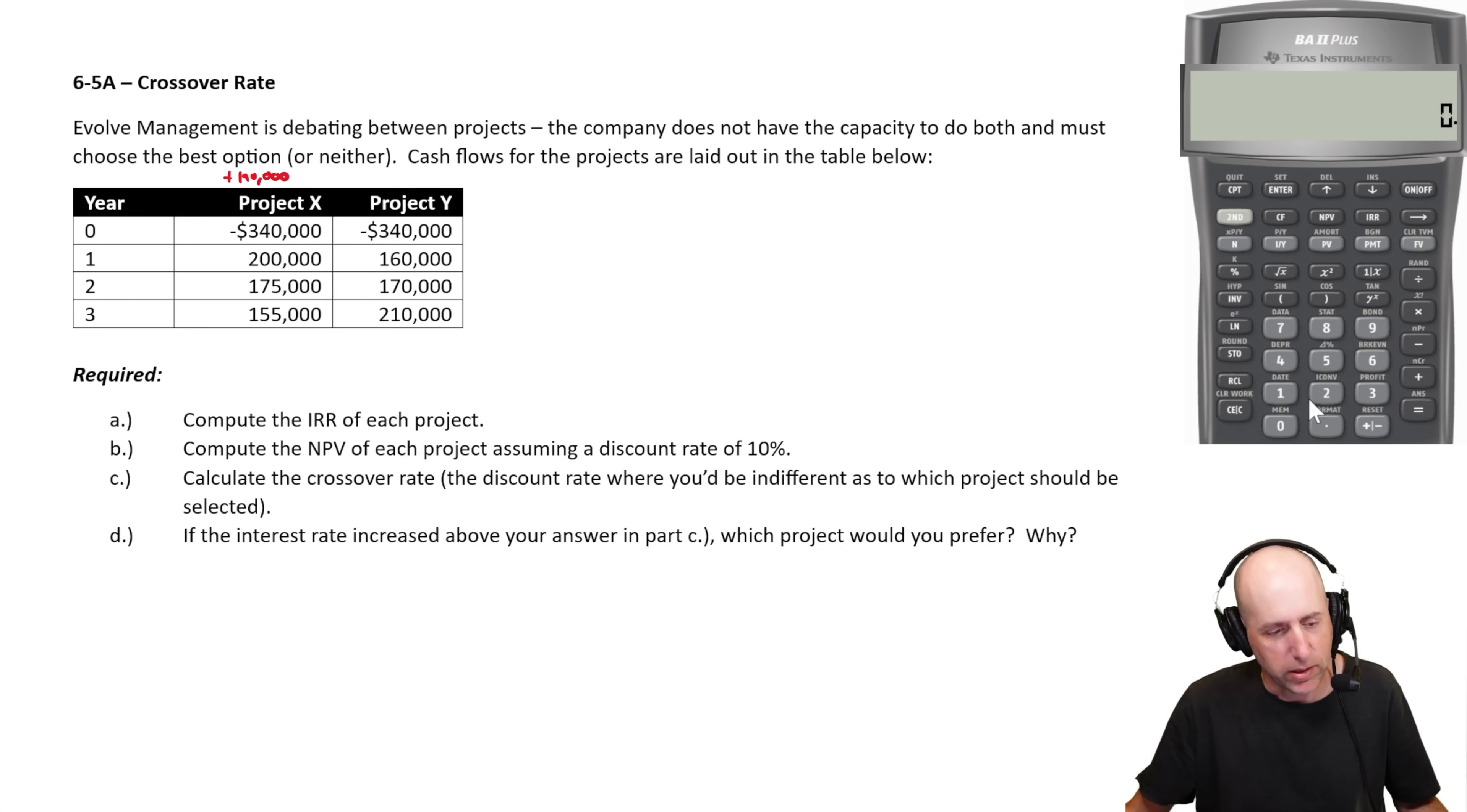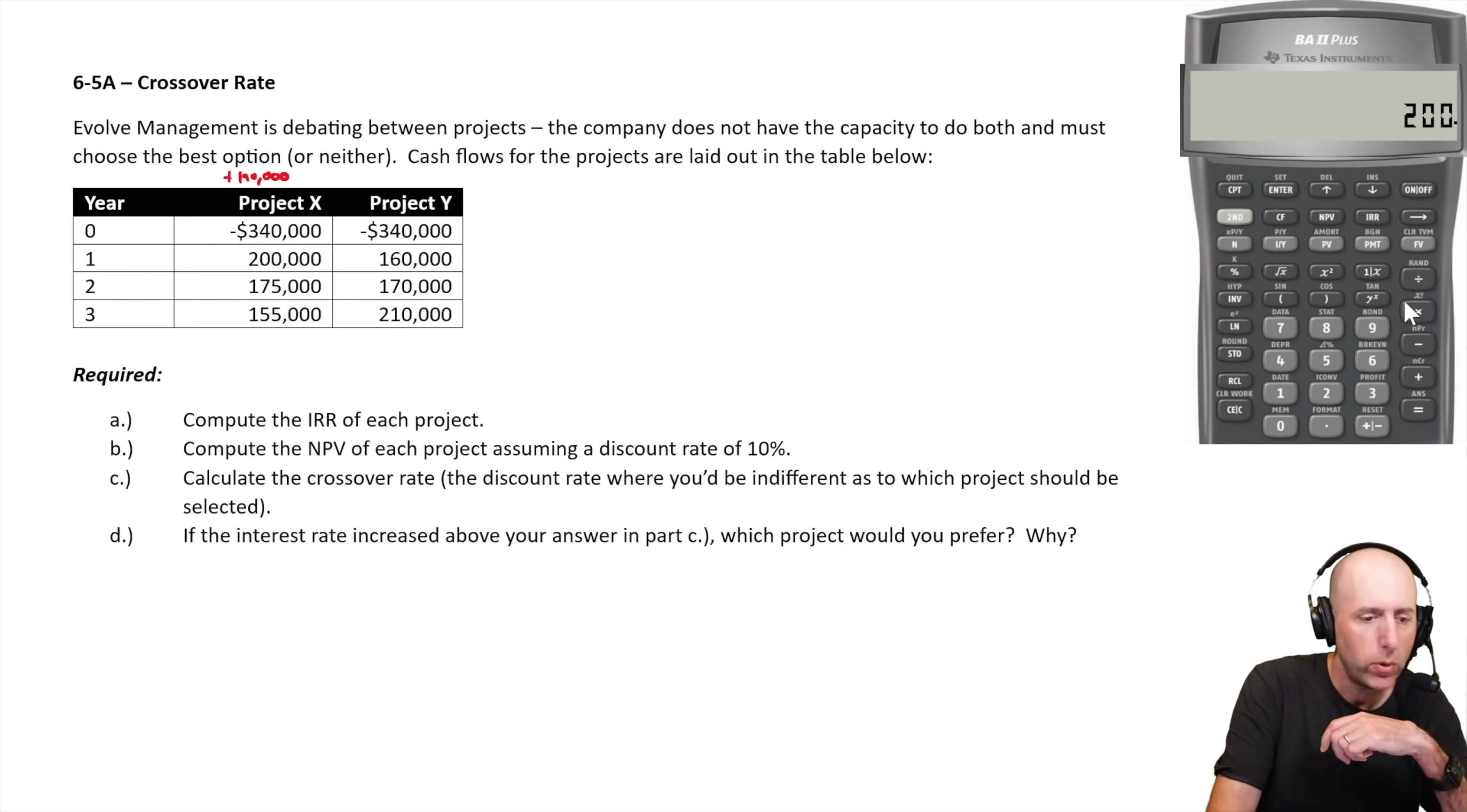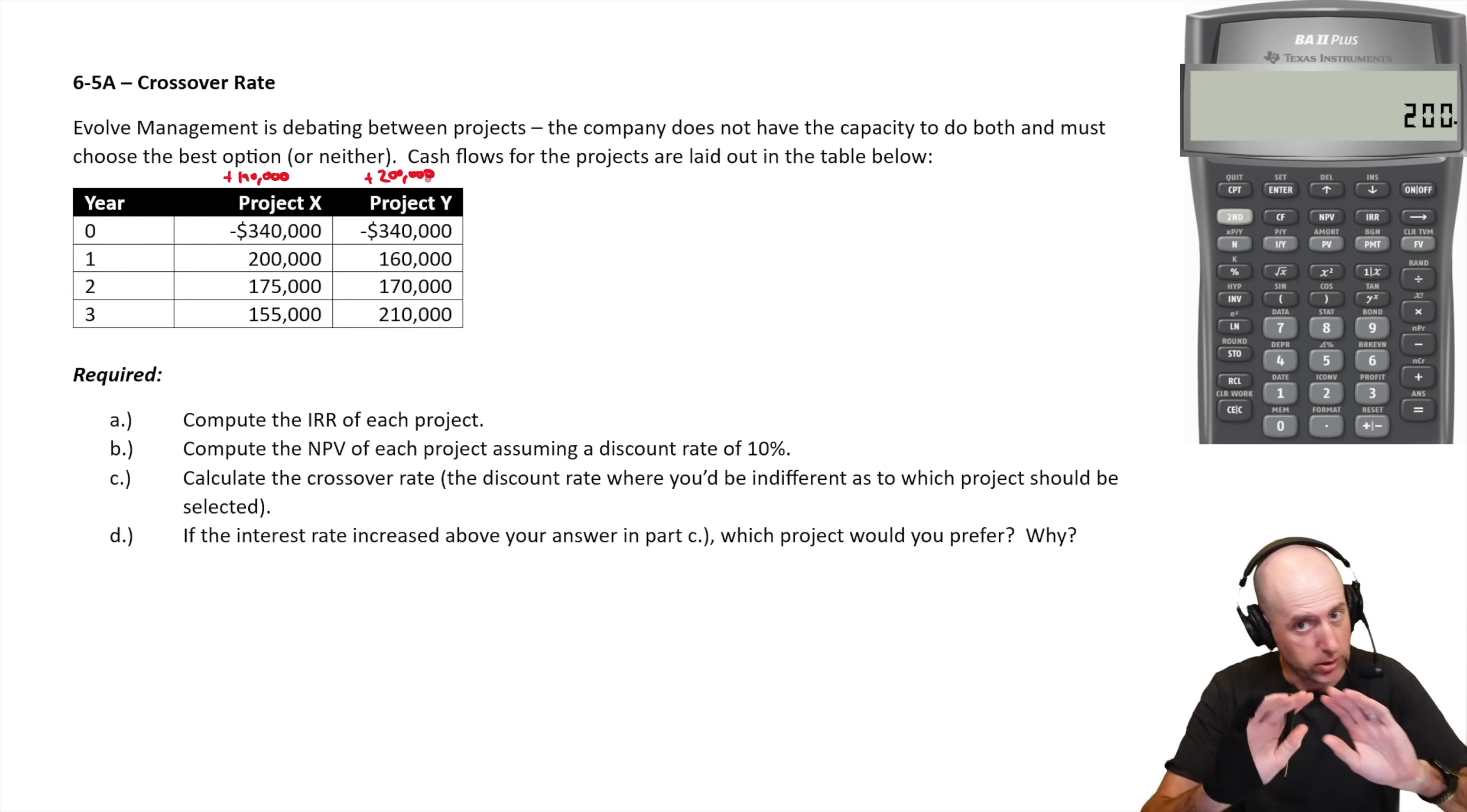And looking at project Y, 340 negative plus 160 plus 170 plus 210. We end up $200,000 ahead on project Y. Just pure cash flow, just calculating the numbers.